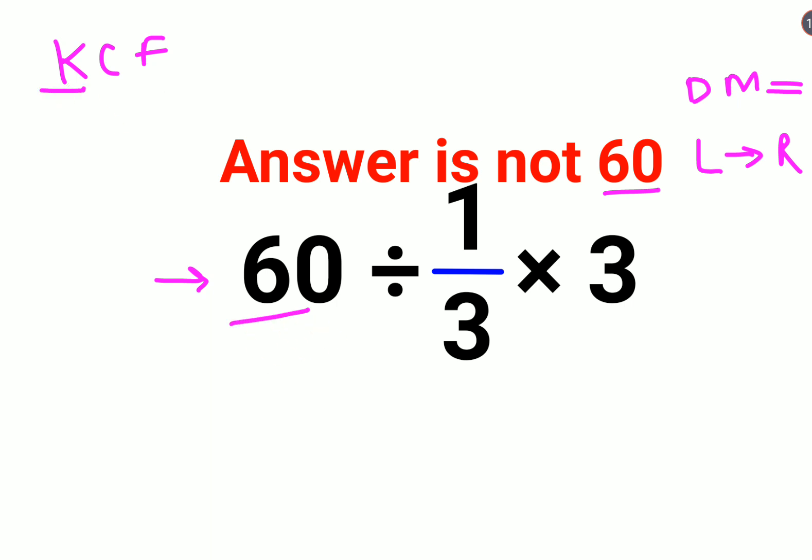K means keeping the first number as it is. C means changing the division sign to multiplication and F means flipping or taking reciprocal of one upon three.